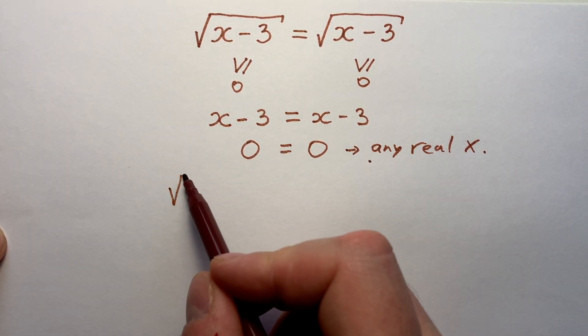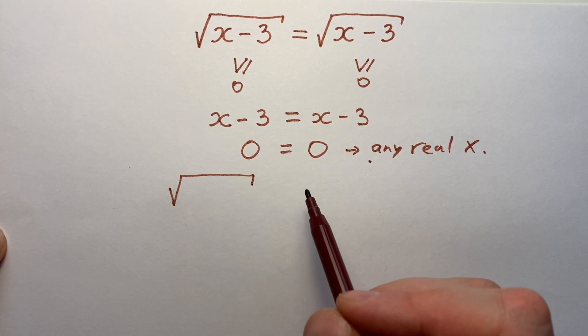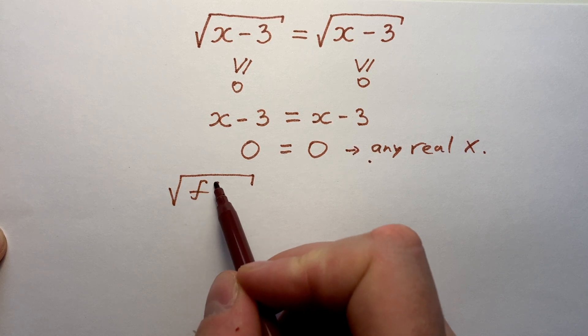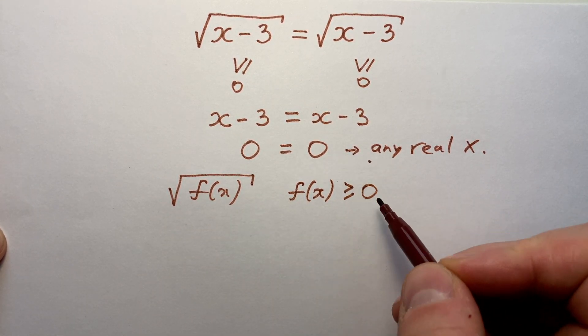If we have a square root in our equation, at first we have to understand that the function under this square root is bigger or equals to zero.